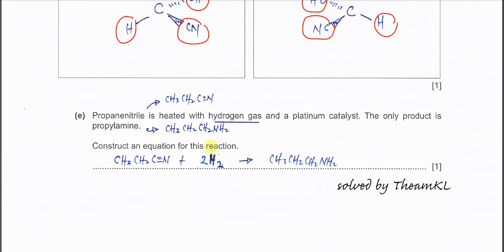Part (e): Propanenitrile is heated with hydrogen gas and platinum. The only product is propylamine. Write the reactants: CH3CH2CN, and the products: CH3CH2CH2NH2. If you compare carefully, this carbon adds two hydrogens and this nitrogen adds two hydrogens. Try not to give H with square brackets because it says hydrogen gas, so just put H2. So 2H2 represents 4H here.